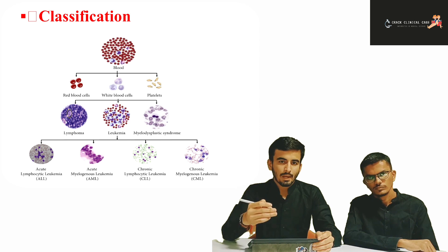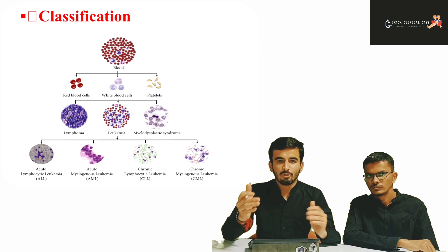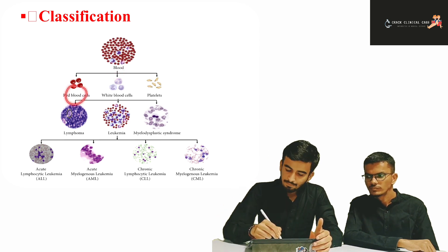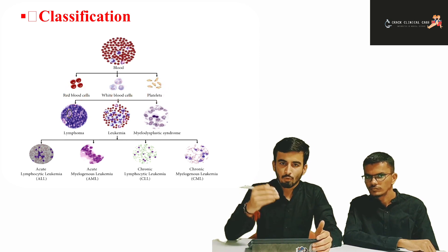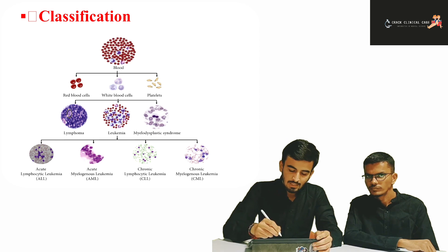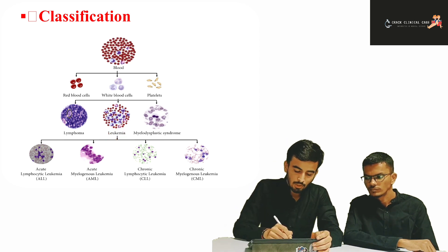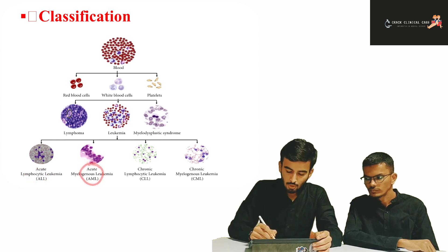Leukemia is classified by the different cell types forming different leukemic features. Blood components include RBCs, WBCs, and platelets, but here we focus on WBC leukemic cells. WBC leukemias are divided into: Acute Lymphocytic Leukemia (ALL), Acute Myeloblastic Leukemia (AML), Chronic Lymphocytic Leukemia (CLL), and Chronic Myelogenous Leukemia (CML).